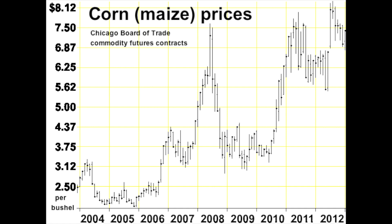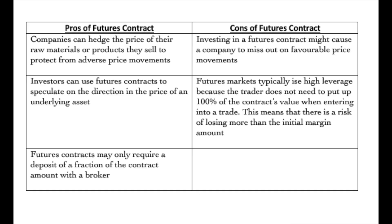Futures can be used for hedging or trade speculation. Looking at the pros of futures contracts: firstly, companies can hedge the price of their raw materials or products they sell to protect from adverse price movements. Investors can also use futures contracts to speculate on the direction of the price of an underlying asset. Futures contracts may also only require a deposit of a fraction of a contract amount with a broker.